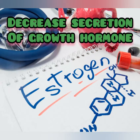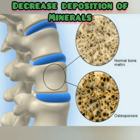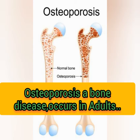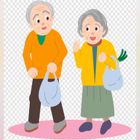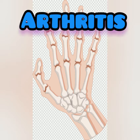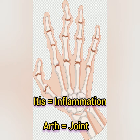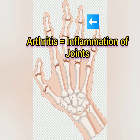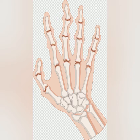With age, there is decreased secretion of growth hormones, which leads to decreased deposition of minerals and bone matrix. Osteoporosis is a bone disease that basically occurs in adults, especially in old people, and it is more common in old women. Arthritis — the suffix 'itis' means inflammation — so arthritis means inflammation of the joints.